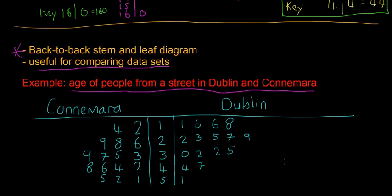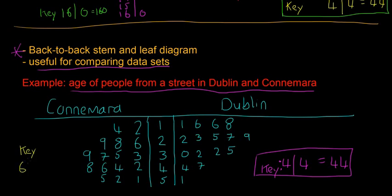Again, it's really important to have a key. On this side we're going to have four line four equals forty-four—that's the key. On this side we're going to have a key as well. The key on this side is six line two equals twenty-six. Because there's a two in the middle here—that's the stem—and then that's the leaf from it. It doesn't mean sixty-two; it means twenty-six because you're reading from right to left. You read this digit first and then this digit to make twenty-six. Make sure to include the key for both sides because they'll be different.